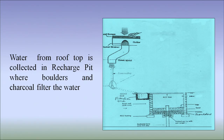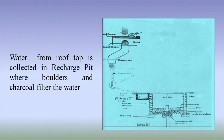In this figure, we can see that water from the rooftop is collected in a recharge pit, where boulders and charcoal filter the water. On top, there is a mesh which prevents debris like leaves from entering the water. Then the water goes down the downspout, which also has a screen to remove pollutants. The gutters take the water to the filter tank, where boulders and gravel filter out pollutants, and it goes down into the recharge pit where it is stored.